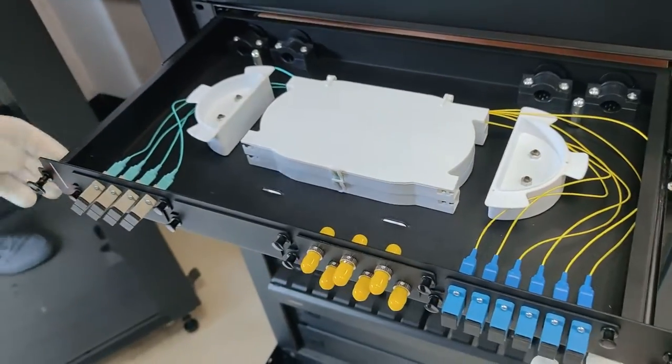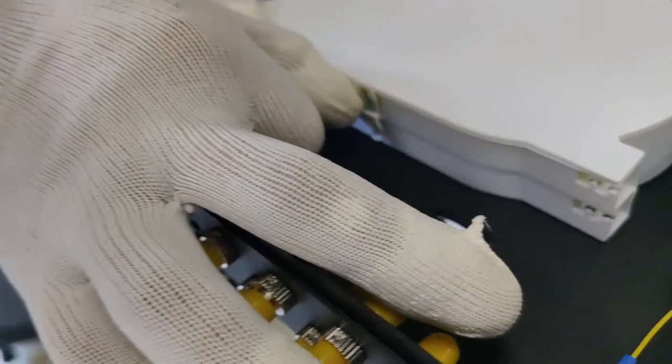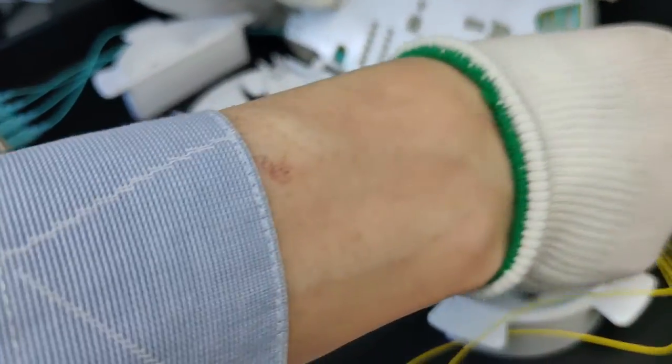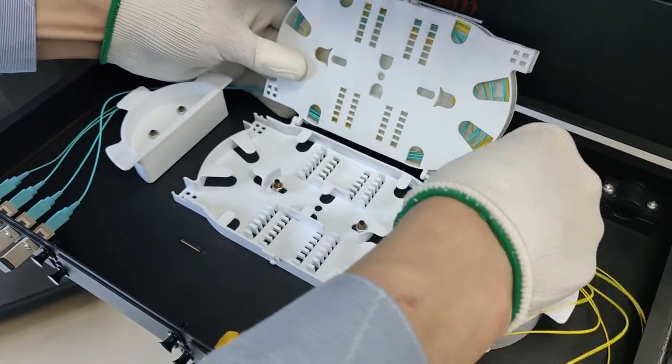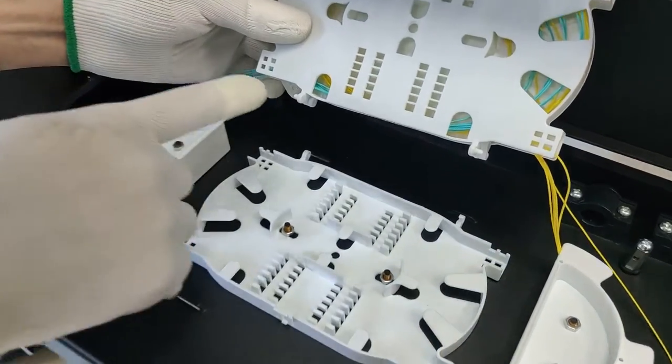The panel is equipped with one cassette for 24 fibers. An additional cassette is ordered for 48 fibers. All cassettes have convenient access for maintenance.